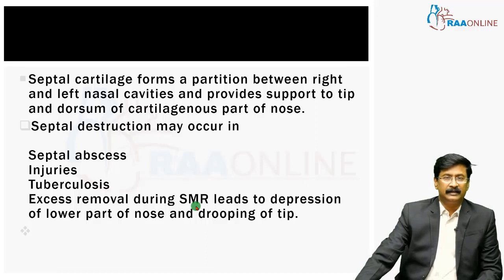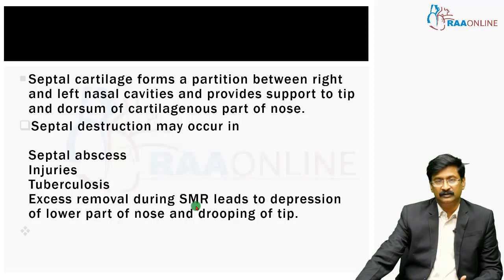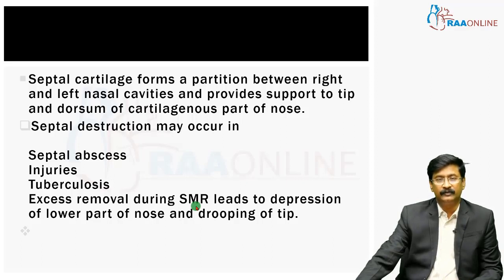The septal cartilage forms a partition between the right and left nasal cavity and provides support to the tip and dorsum of the cartilaginous part of the nose. Septal destruction or disease can happen with infection such as a septal abscess, trauma, or tuberculosis, where destruction or perforation can happen in the septal cartilage.